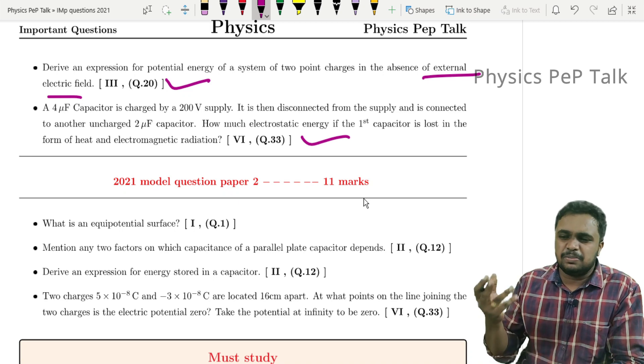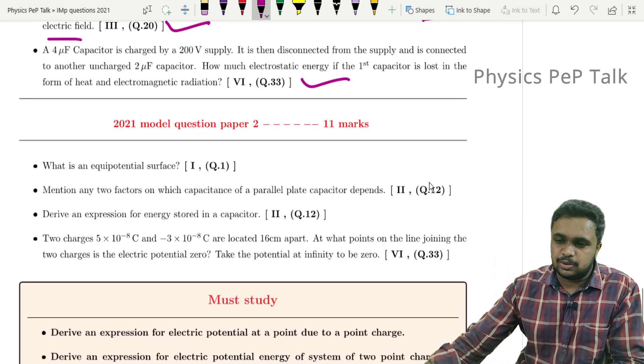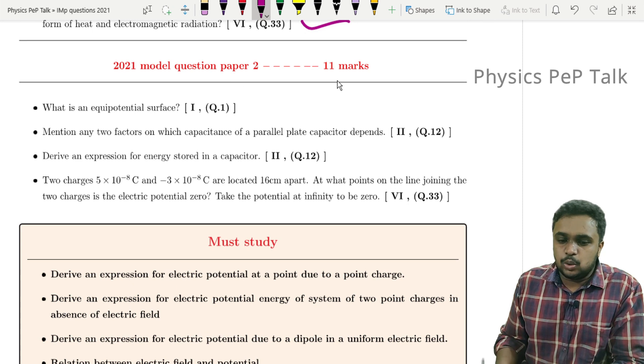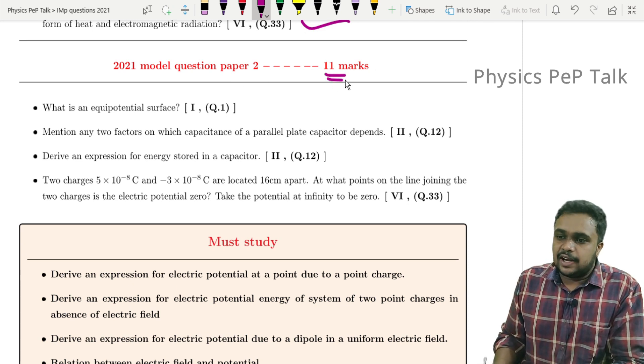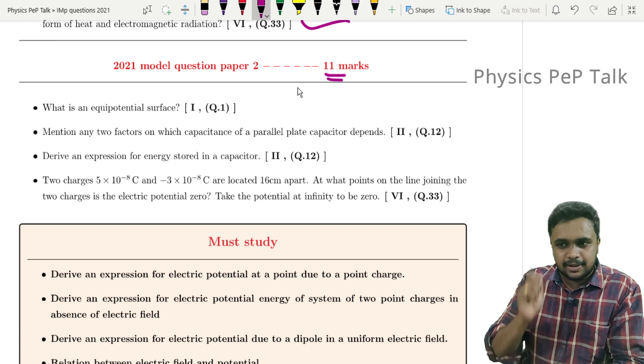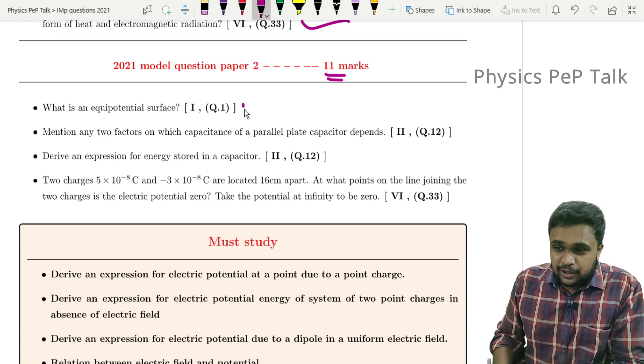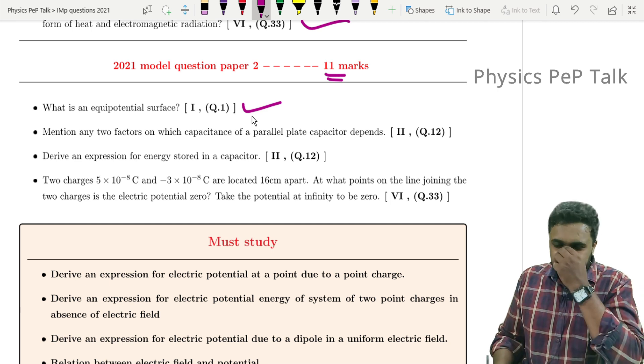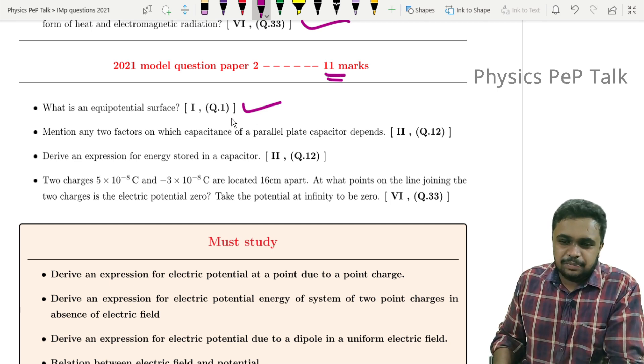Next, Model Paper 2 has 11 marks. Model Paper 1 had 10, Model Paper 2 has 11. So this chapter is important. What is the equipotential surface? Just a one mark basic question.